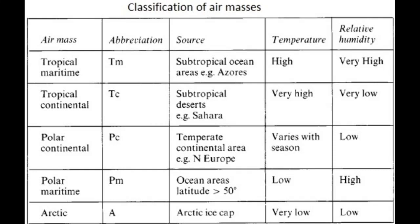Regarding temperature: tropical maritime is high, tropical continental is very high, polar continental varies by season, polar maritime is low, and Arctic is very low. For relative humidity: tropical maritime is very high, tropical continental is very low, polar continental is low, polar maritime is high, and Arctic is low.